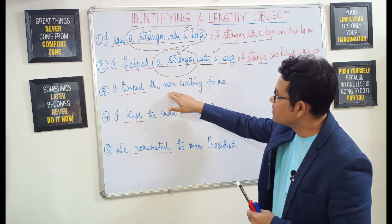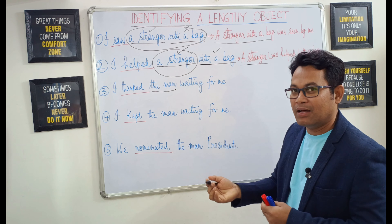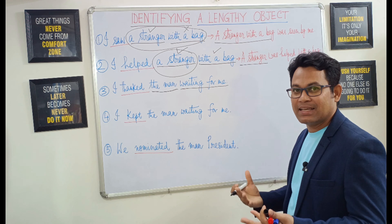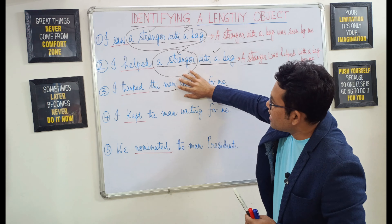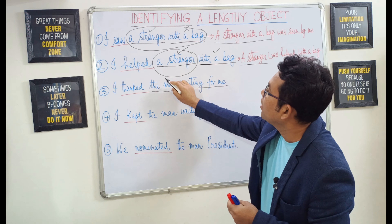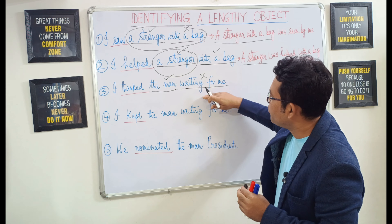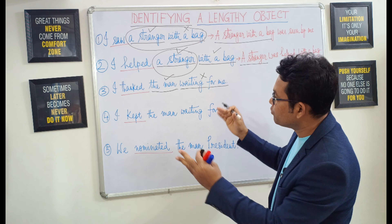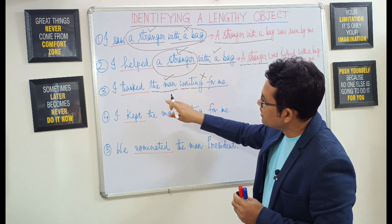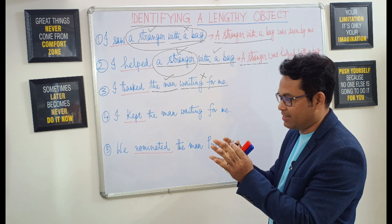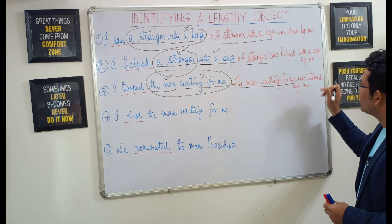Example number three: I thanked the man waiting for me. After the transitive verb 'thanked,' we are getting two units: 'the man' — a noun phrase — and 'waiting for me' — an adjective phrase. Should we put them together or keep them separated? Applying the rule: 'I thanked the man' is making sense, so 'the man' is an independent unit. But 'I thanked waiting for me' is not making any sense, so 'waiting for me' is not an independent unit. Therefore we keep the independent and dependent units together, and the noun phrase plus the adjective phrase together will be the object. The passive voice: 'The man waiting for me was thanked by me.'